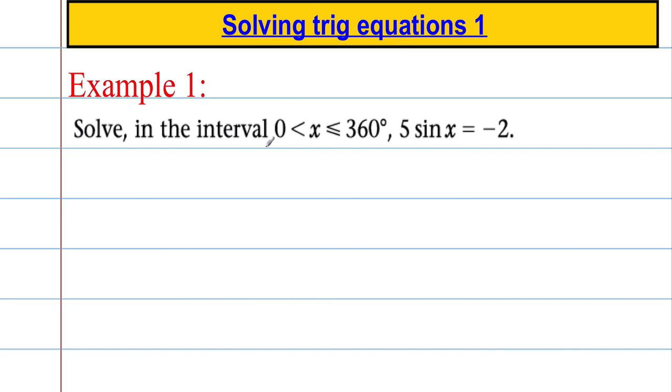I'm looking to solve this in the interval 0 up to 360 degrees: 5 sin x equals negative 2. So 5 sin x equals negative 2, I can divide both sides by 5 to get sin x equals negative 2 over 5. Then we can take the inverse sine, sometimes known as arcsine, of negative 2 over 5 and put that into the calculator.